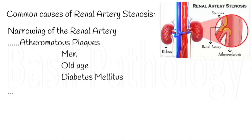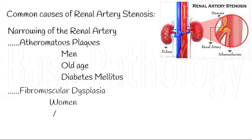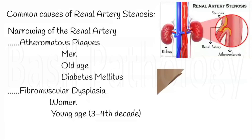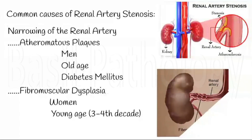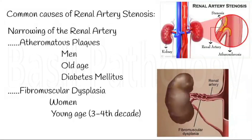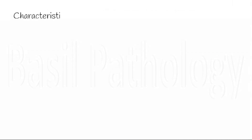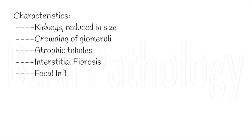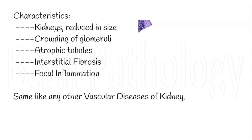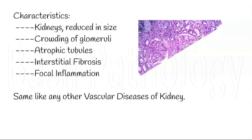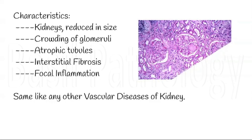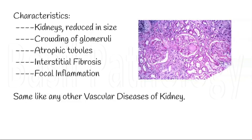The second most common cause of renal artery stenosis is fibromuscular dysplasia affecting the tunica media of the arteries. This genetic defect affects women more than men, mostly in their third to fourth decade. Also most commonly associated with diabetes mellitus. The characteristics of renal artery stenosis grossly are: the kidneys are small in size, there will be crowding of glomeruli, atrophic tubules, interstitial fibrosis, and focal inflammation, as seen in other vascular diseases of the kidney.